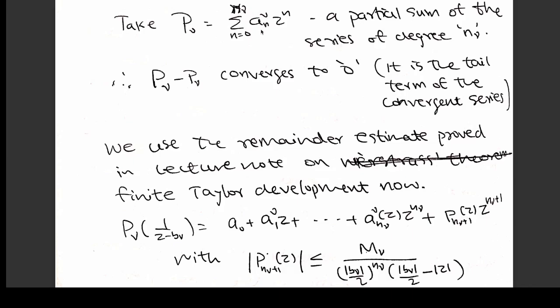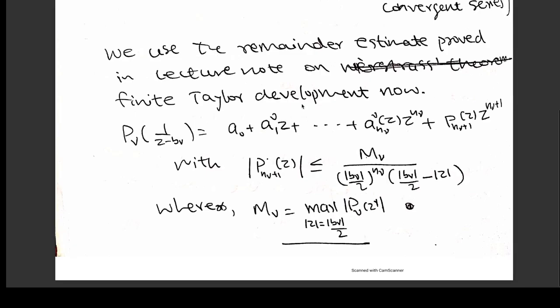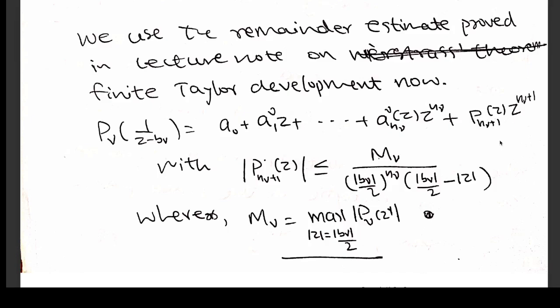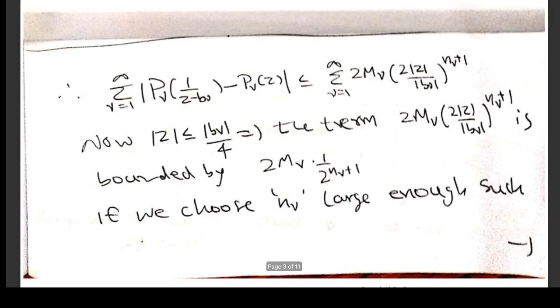The difference of this will converge to 0. From the remainder estimate of the Taylor development, we have the finite Taylor development up to degree n_ν, where the (n_ν + 1)-th term is the remainder, and we choose the polynomial of degree n_ν as small p_ν. The difference will be this remainder term, which you can estimate over the disk of radius |b_ν|/2.